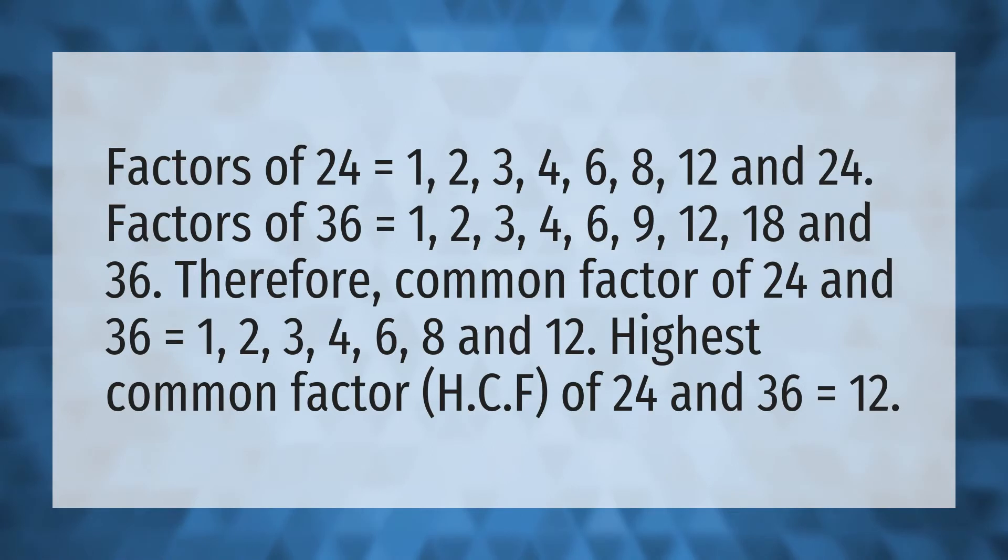1, 2, 3, 4, 6, 9, 12, 18, and 36. Therefore, common factors of 24 and 36 equals 1, 2, 3, 4, 6, 8, and 12. Highest common factor (HCF) of 24 and 36 equals 12.